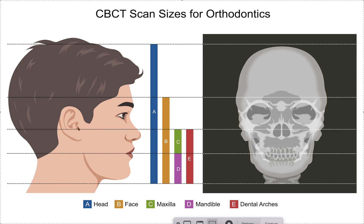Hey, it's Dr. Amanda with Straight Smile Solutions, straightsmilesolutions.com. Today we're going to talk about CBCT scan sizes for the Invisalign integration. I did another video on this previously with just a general overview, but basically they accept five different scan sizes — five different ortho scan sizes: full head, face, upper jaw, lower jaw, or both dental arches together.